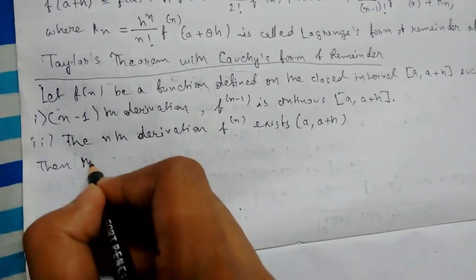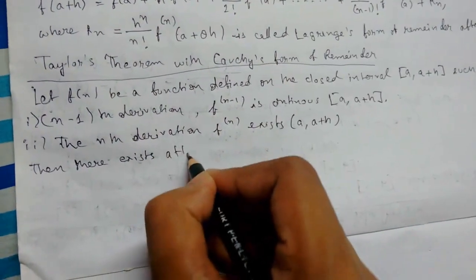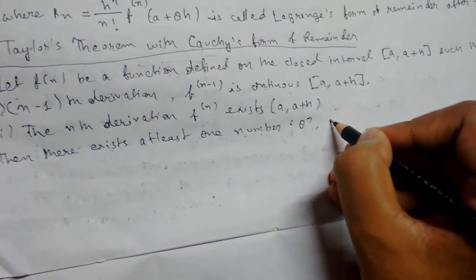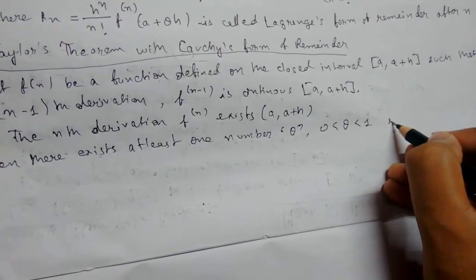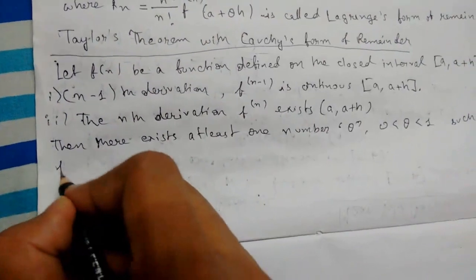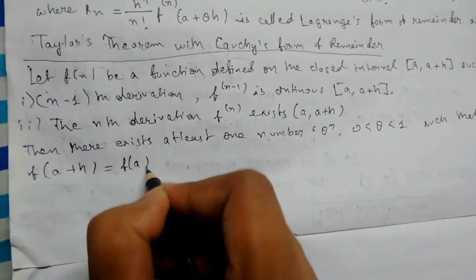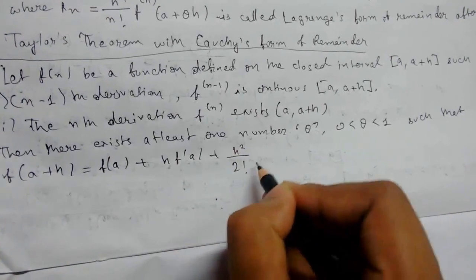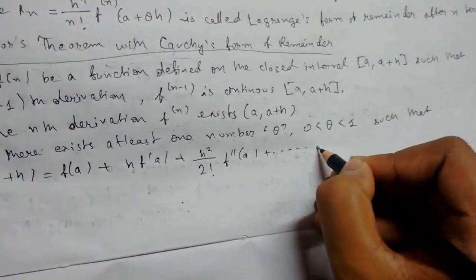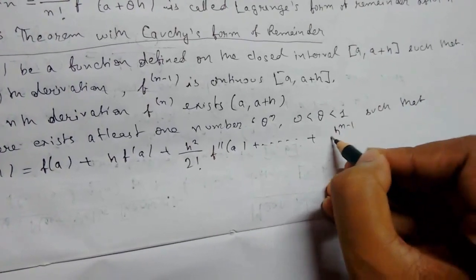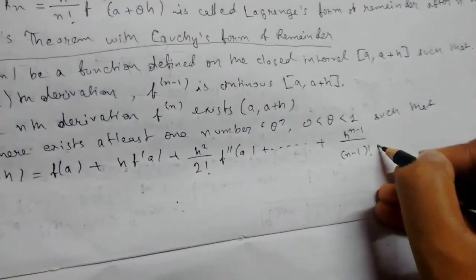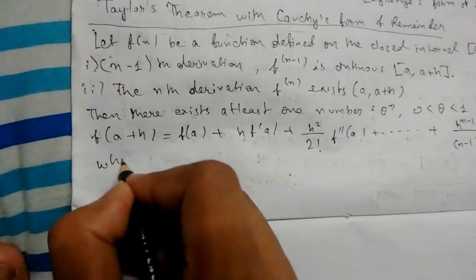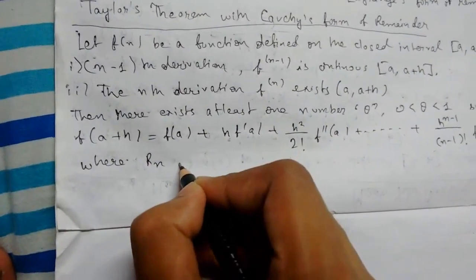Then there exists at least one number θ where 0 < θ < 1, such that f(a+h) = f(a) + h·f'(a) + h²/2!·f''(a), continuing up to h^(n-1)/(n-1)!·f^(n-1)(a) plus R_n.